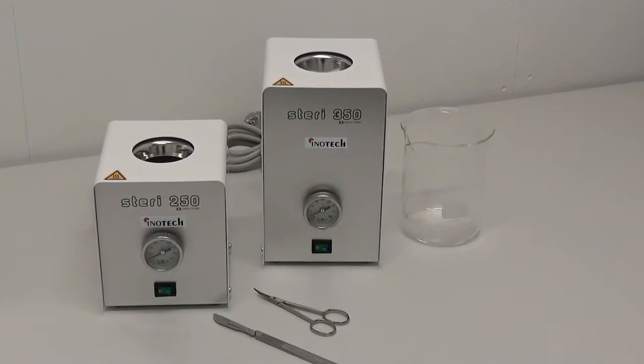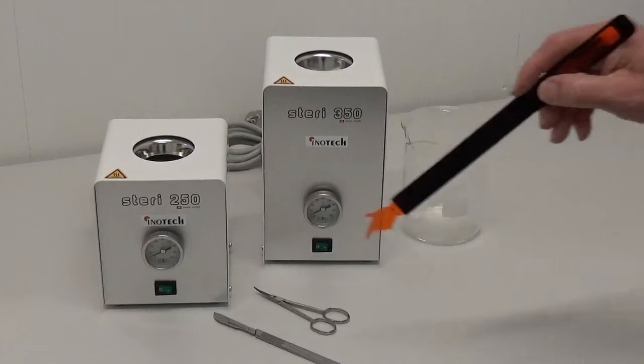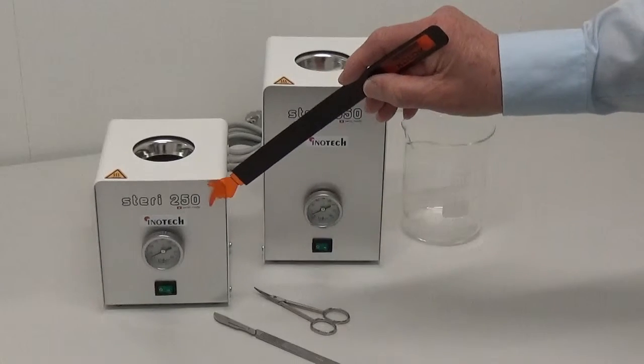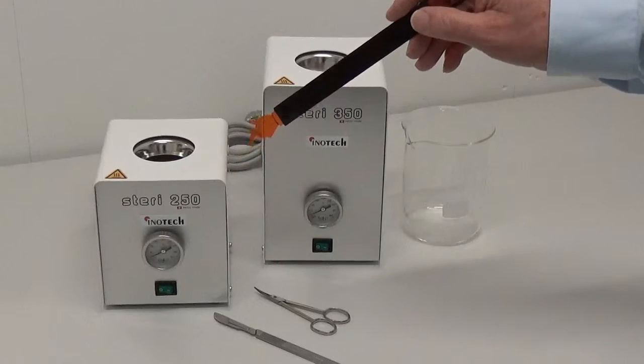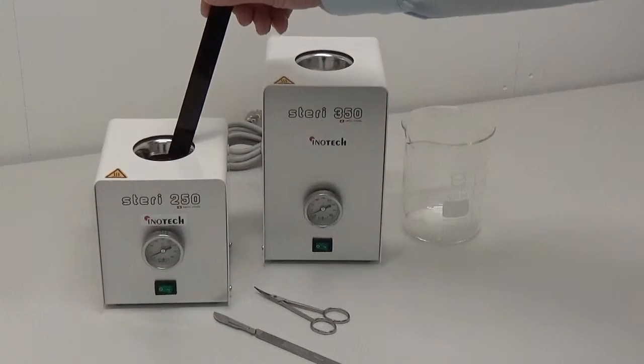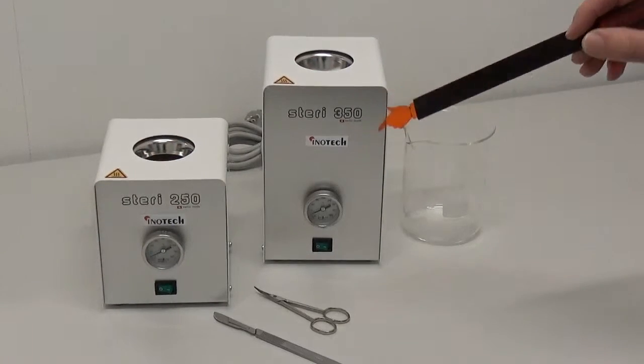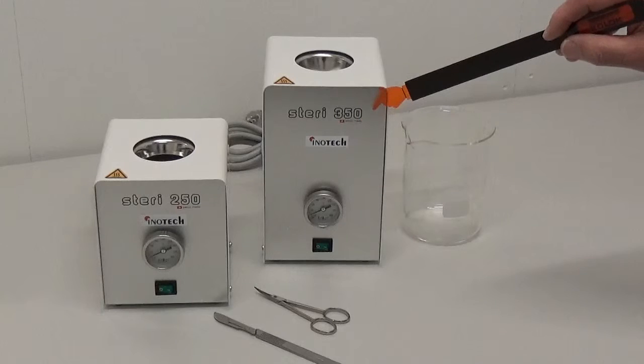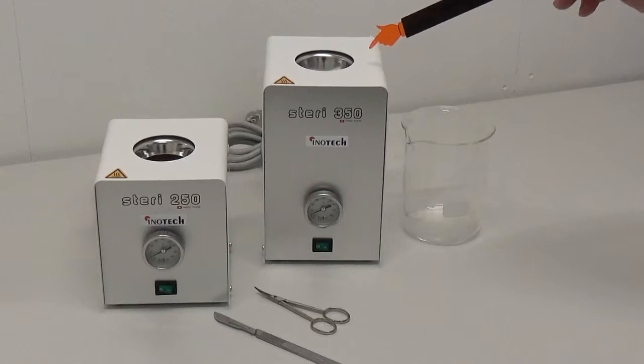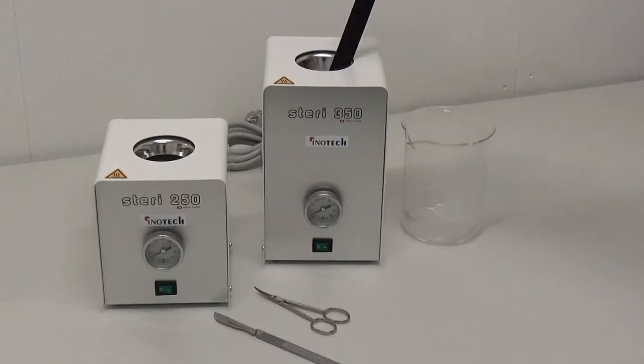Steris are available in two sizes. Steri 250 has a sterilizing well of 4 by 8 cm. Steri 350 has a sterilizing well of 4 by 14 cm.